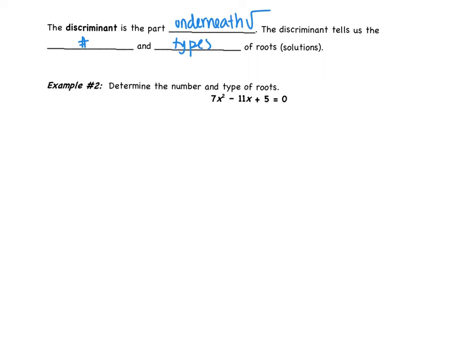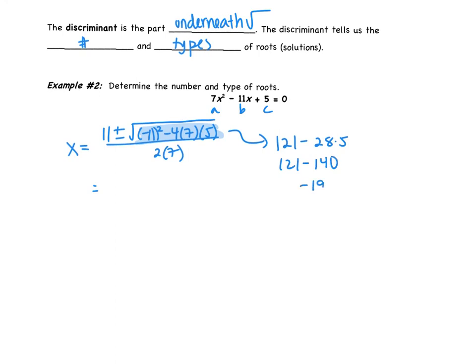Okay, so we're going to determine the number and type of roots, for example, too. I'm not telling you to solve. We're not solving. We're going to set up, though. So if we were to set up, we would get 11 plus or minus square root of negative 11 squared minus 4ac all over 2a. Okay, again, this is what I care about, though. So we're going to focus on that. We get 121 minus 4 times 7 is 28. We get 28 times 5. 28 times 5 is 140. So we get negative 19. Negative underneath the square root means we're going to have imaginary solutions.